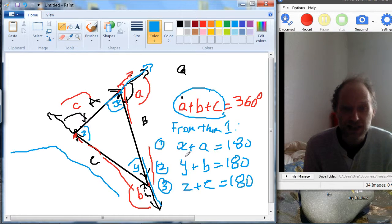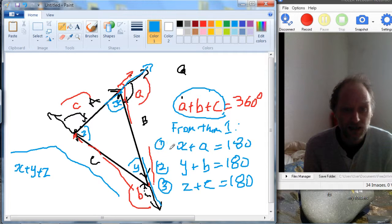So then, on the left-hand side of the equation, we will have X plus Y plus Z, taking all of these ones, plus A plus B plus C. So that's everything on the left-hand side when we add them all together. And on this side, we've got 180 plus 180 plus 180, so three times 180.